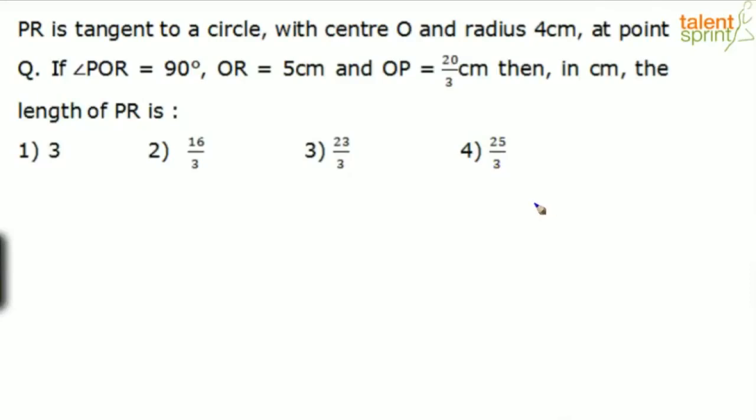So let's take a circle here. PR is a tangent to a circle with center O. The circle is with center O and radius is 4 cm at point Q. So PR is a tangent. Let's say this is the tangent at point Q. This is P and R. PR is a tangent for the circle at point Q. The tangent touches the circle at point Q.